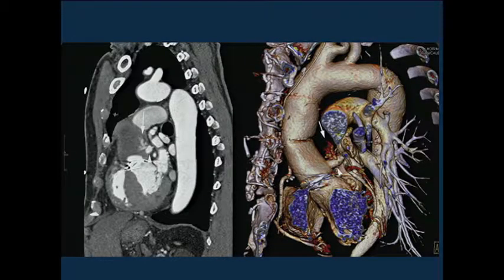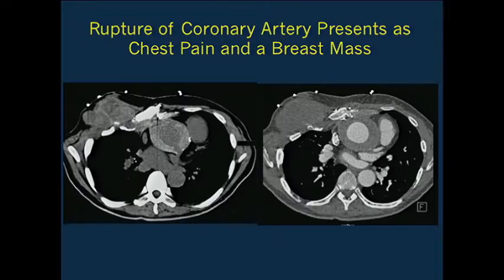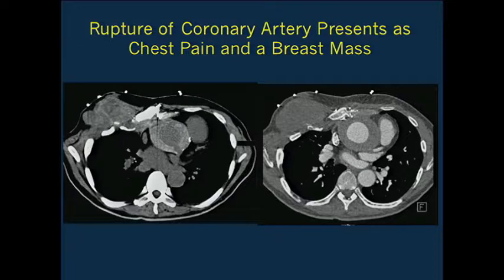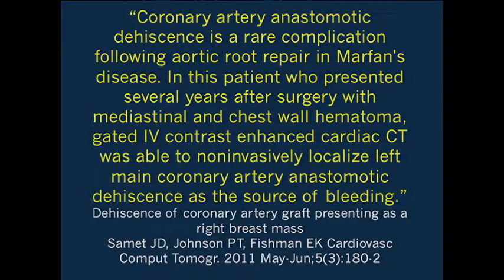Looking at the imaging of her root and left main coronary, you can see very nicely the active bleed from the patient's left main coronary artery, shown nicely on 3D maps as well. What happened basically was she bled and it dissected through her chest wall. We've seen a few patients with bleeds extending into the mediastinum, but into the chest wall—this patient's only symptoms were this enlarging chest wall mass. In fact, the initial presentation was to send her for a mammogram.